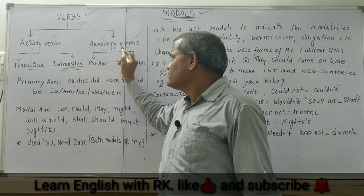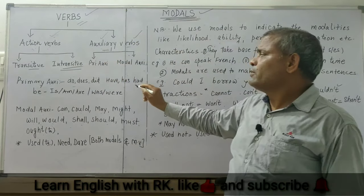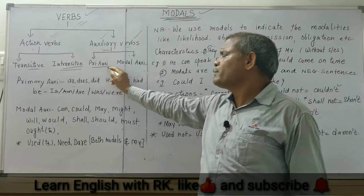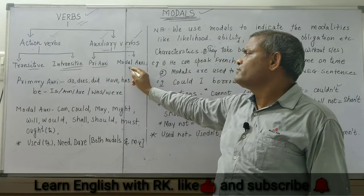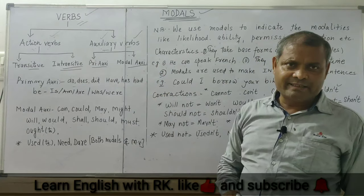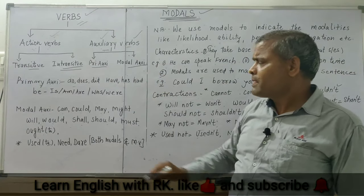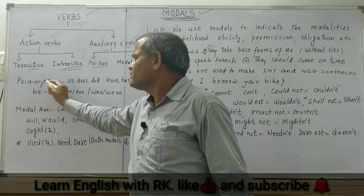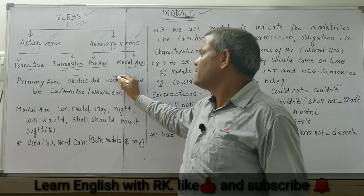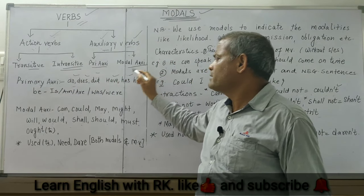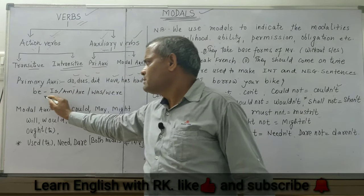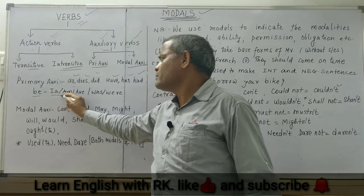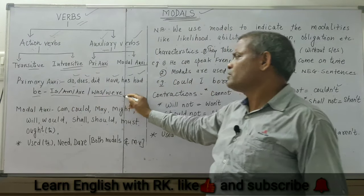The second category is auxiliary verbs. Again, we have two types: primary auxiliaries and modal auxiliaries. Primary auxiliaries are: do, does, did, has, have, had, and be — whose present form is 'am/is/are' and past form is 'was/were'.